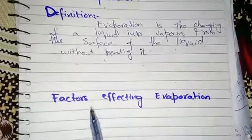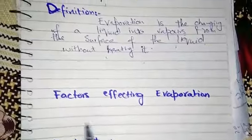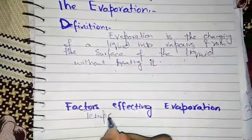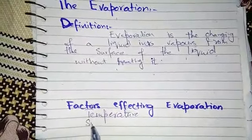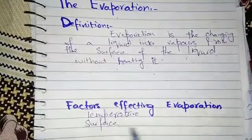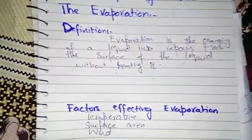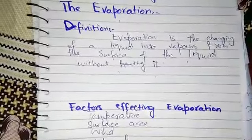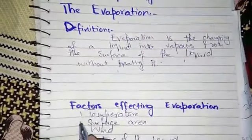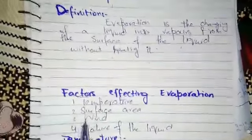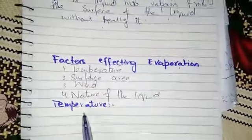There are factors on which evaporation depends. Our first factor is temperature, second is surface area, third is wind, and fourth is nature of the liquid. There are four factors on which evaporation depends.